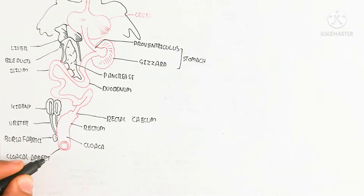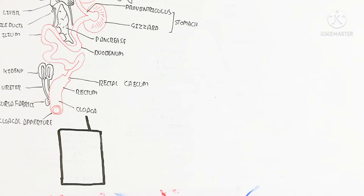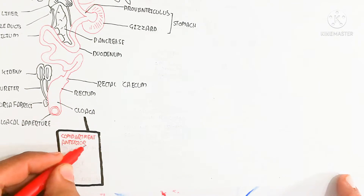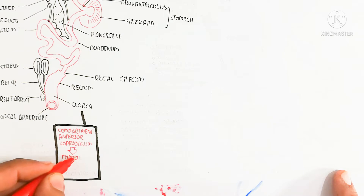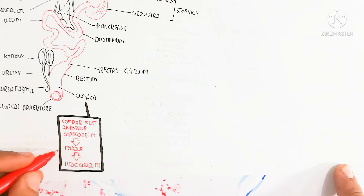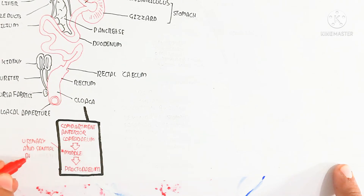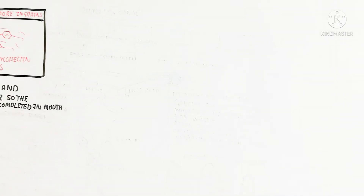The bursa is present and is a lymphatic organ responsible for the production of antibodies from B cells. The cloaca aperture is used for expelling fecal matter. The cloaca is divided into three parts: the anterior coprodeum, the middle urodeum which receives openings of the urinary and genital ducts, and the last part, the proctodeum.